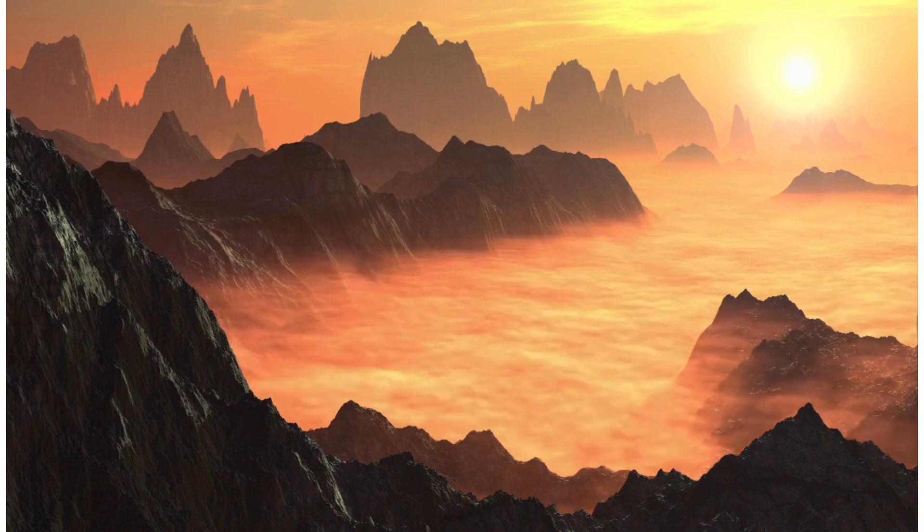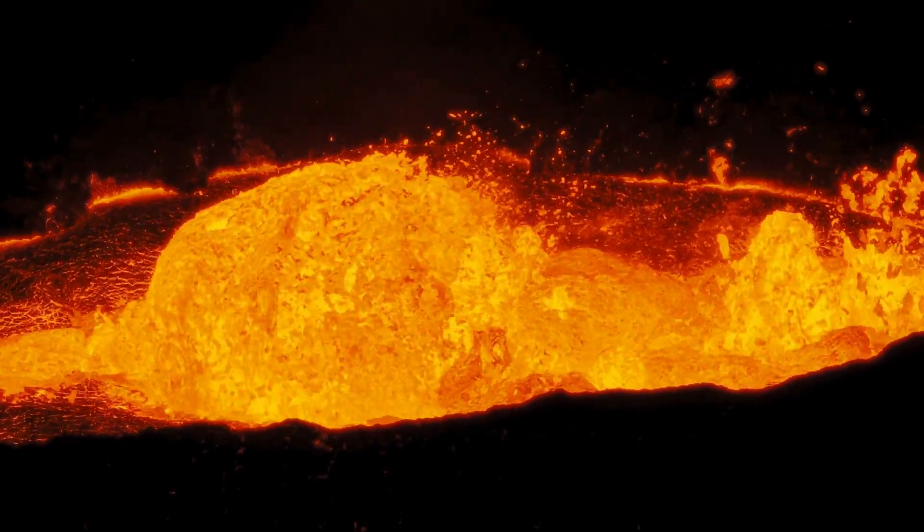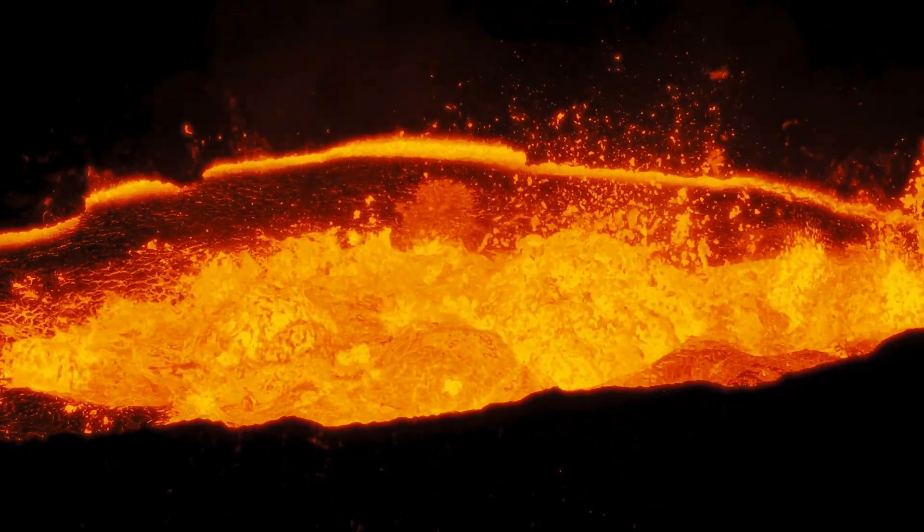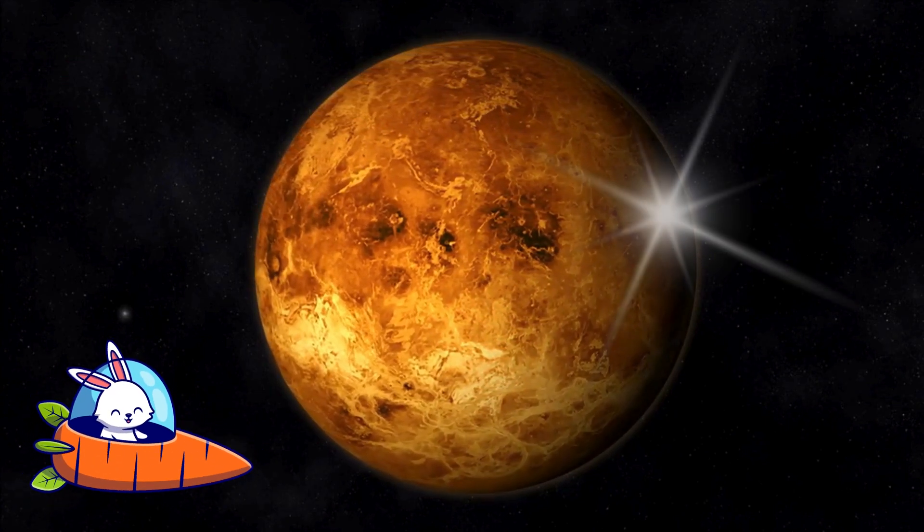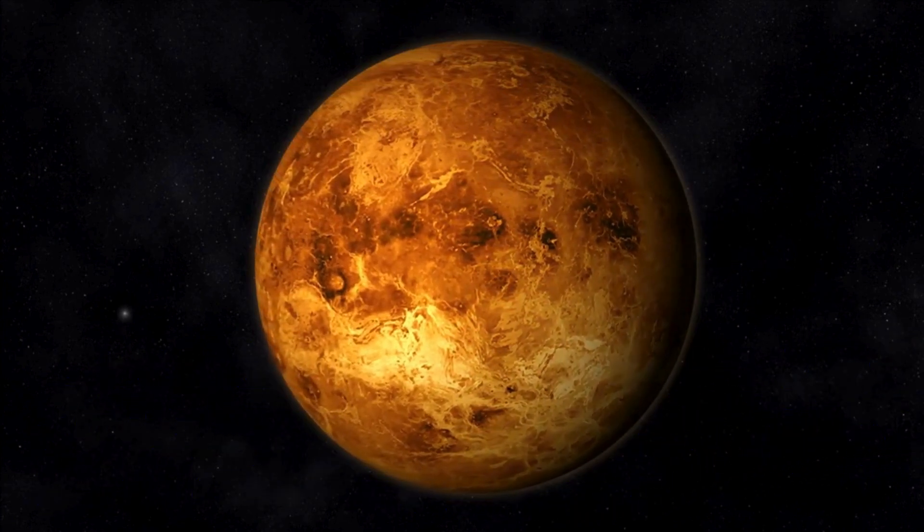Venus has super thick clouds made of toxic gases, and it's covered in volcanoes. The clouds trap heat, making Venus like a huge pressure cooker. Even though it looks beautiful and shiny, you wouldn't want to live here.